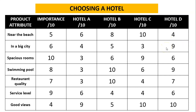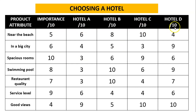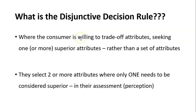To help us, we're going to use this scoring table — a compensatory model — and we're going to refer to this when we apply our decision rule. You can see it's four hotels that we're thinking about going to, the attributes we're looking at, an importance rating out of 10, and each hotel is then scored out of 10 from the consumer's perspective. The higher the score, the better the perceived quality.